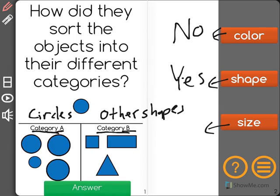And let's just check size. As you can see, we have a really little circle over here and some bigger ones, so no, they didn't sort it by size. The correct answer is shape. They sorted these objects based on what shape they were.